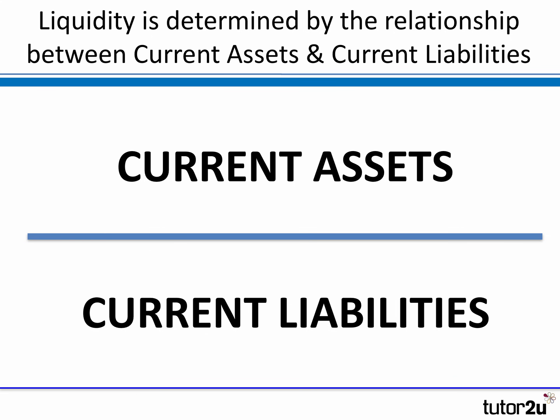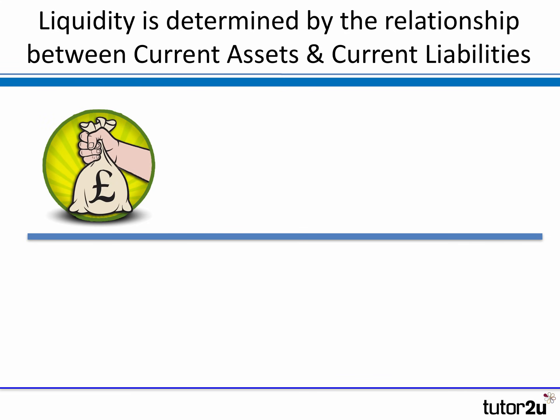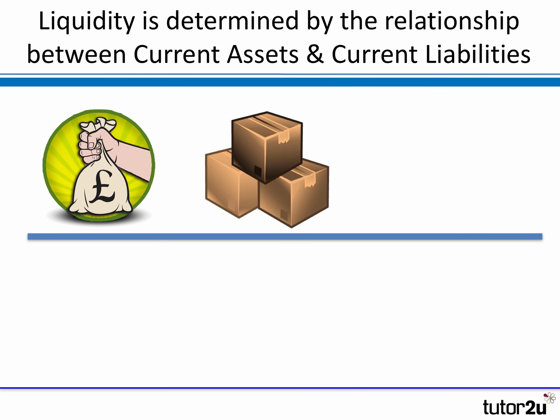Liquidity essentially requires you to compare two types of information from the balance sheet: current assets and current liabilities. One of the most common current assets is cash — the cash in hand or in the bank. There are also two other main types: stocks or inventories held by the business, perhaps at the warehouse or as work in progress or raw materials flowing through the production process for a manufacturing business.